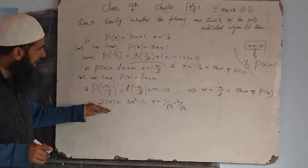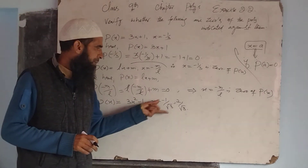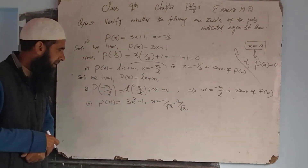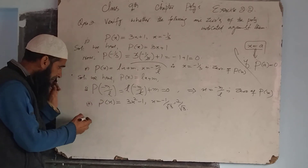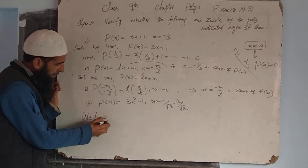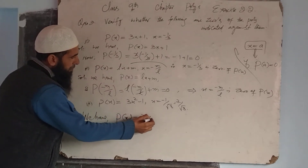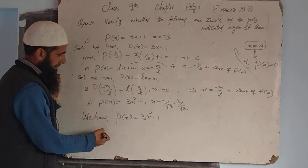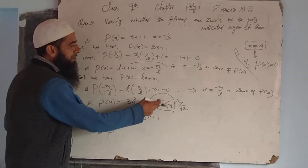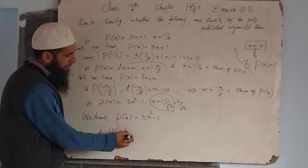Third part: P(x) = 3x² - 1, and we have two values to check. For the first value, x = -1/√3, we compute P(-1/√3).